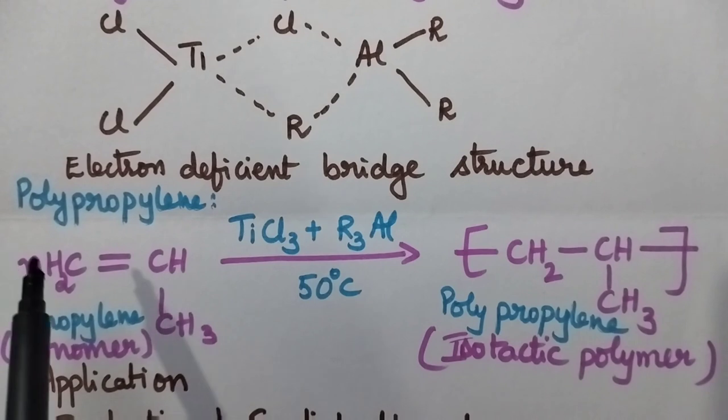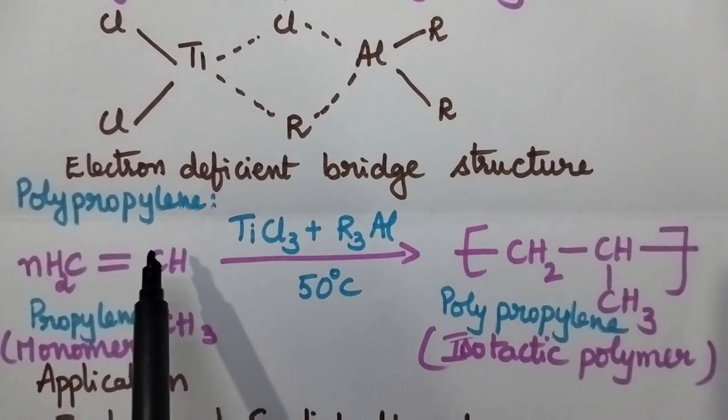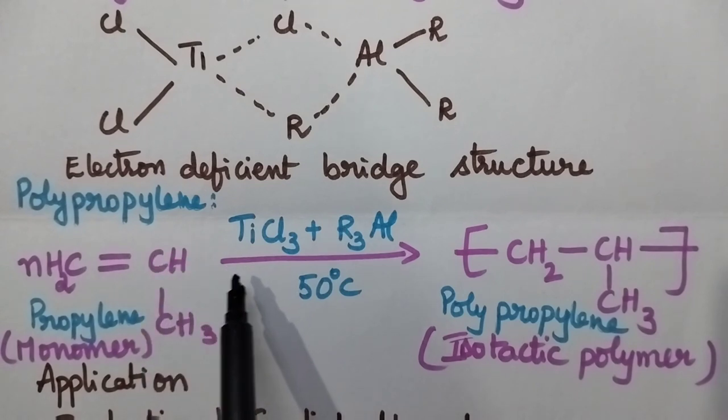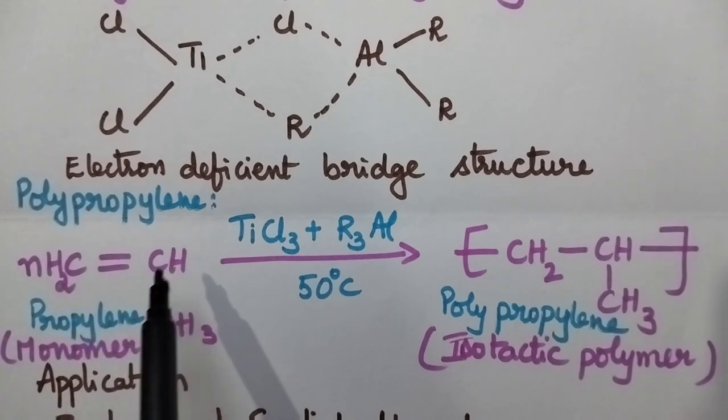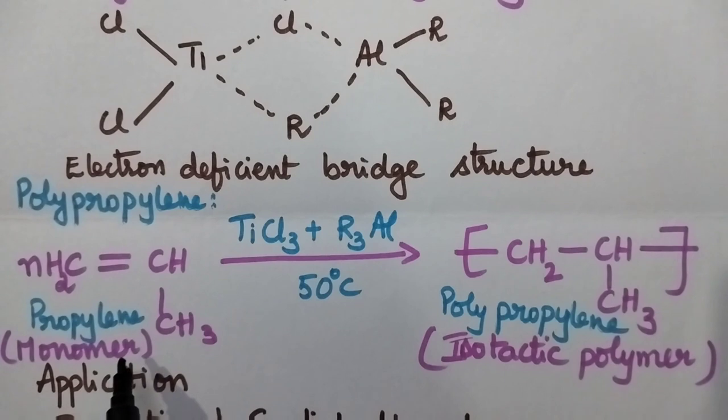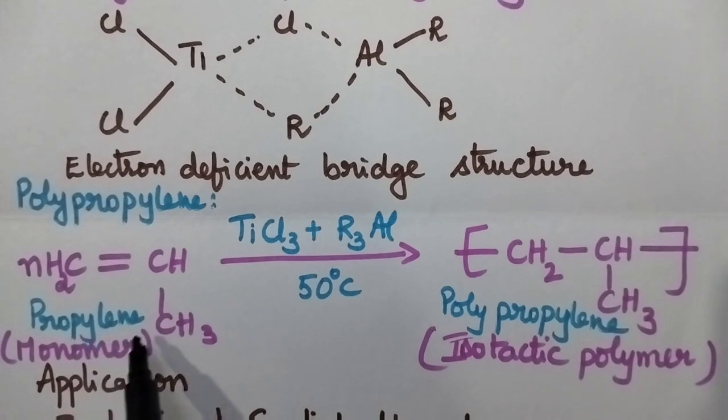Let us consider the formation of polypropylene. Polypropylene can be obtained by the coordination polymerization of propylene. The structure of propylene is CH2 double bond CHCH3 which acts as the monomer. In the presence of titanium trichloride and trialkyl aluminium at 50 degree centigrade, these propylene monomers undergo polymerization and result in the formation of polypropylene.